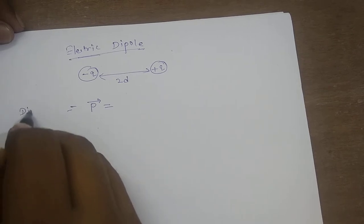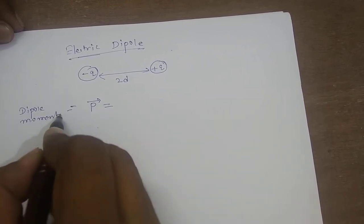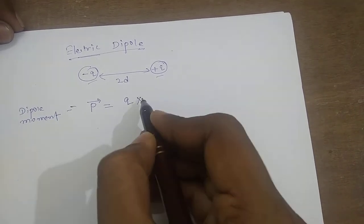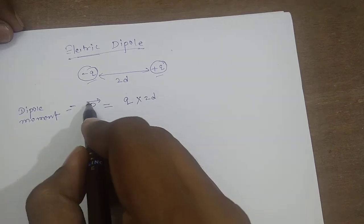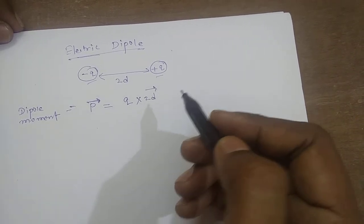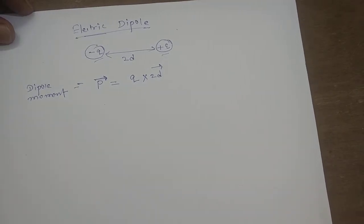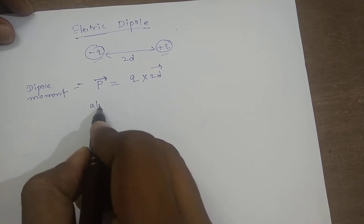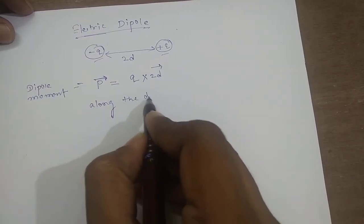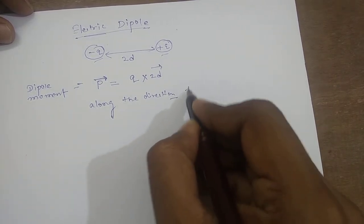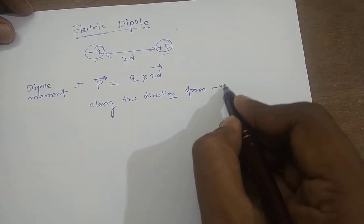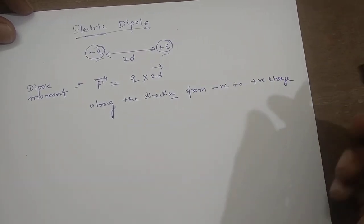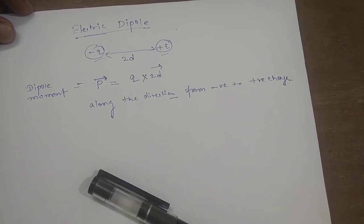Dipole moment is equal to the product of either charge — either this one or this one — and the separation between them. As it is a vector quantity, I should put an arrow sign. If it is a vector quantity, it should have a direction, and the direction will be along the direction from negative to positive charge. That means the direction is indicated by the line joining from negative to positive charge.